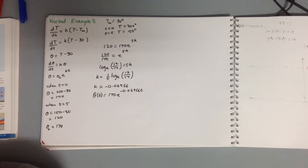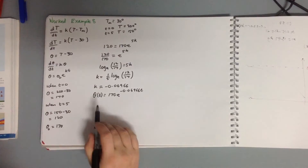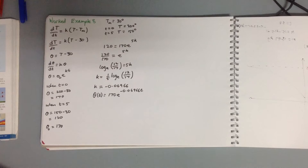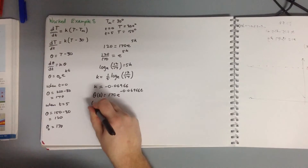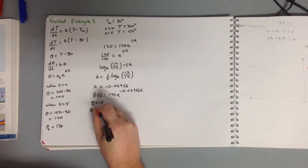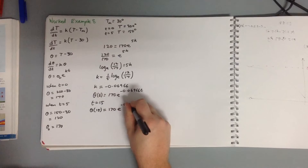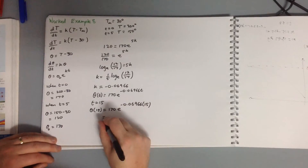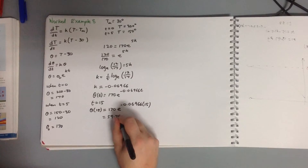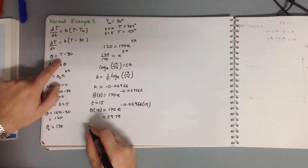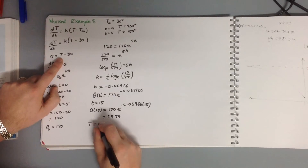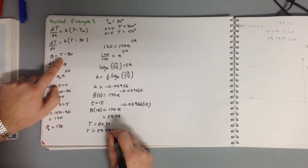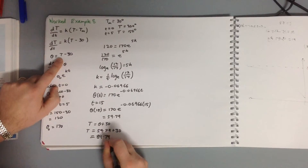For part B, we need the temperature of the bowl after a further 10 minutes. Since the bowl has already been cooling for 5 minutes, we use T equals 15. Theta(15) equals 170 e to the negative 0.06966 times 15, which gives 59.79. The actual temperature equals theta plus 30, so temperature equals 59.79 plus 30 equals 89.79 degrees.